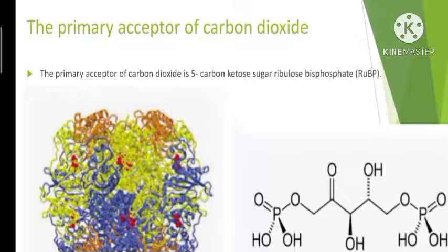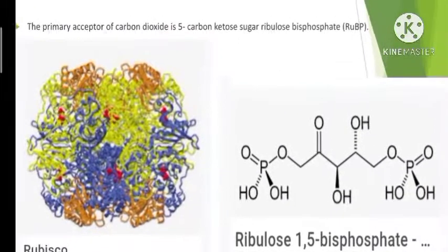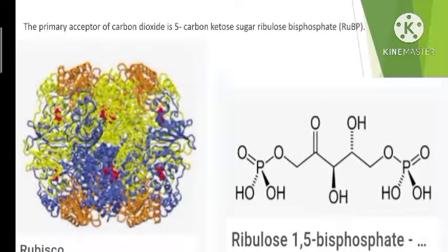It took several years, and at last they were not able to identify any 2-carbon compound. Instead, they found a 5-carbon keto sugar called ribulose bisphosphate, or ribulose 1,5-bisphosphate, and this was the primary acceptor of carbon dioxide. This is the molecule which accepted carbon dioxide, and the initial product 3-phosphoglyceric acid was formed.